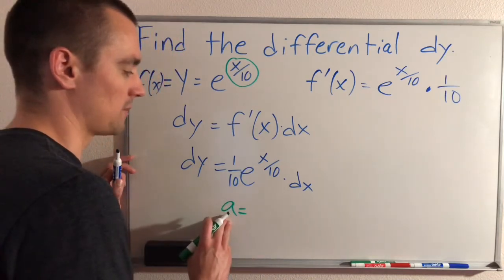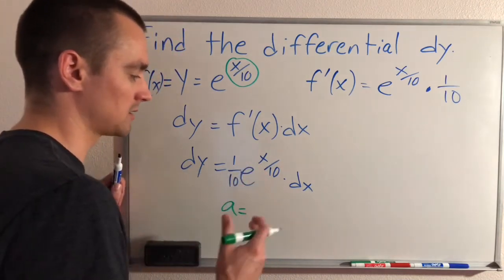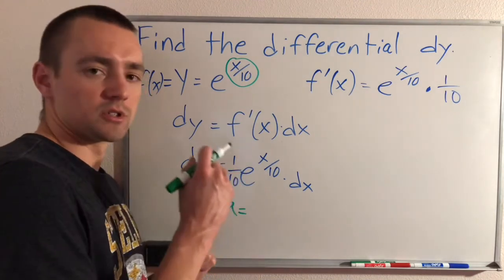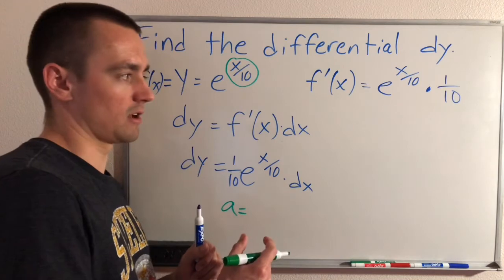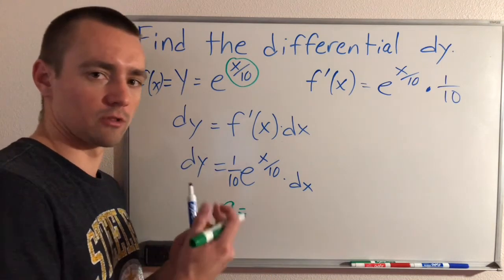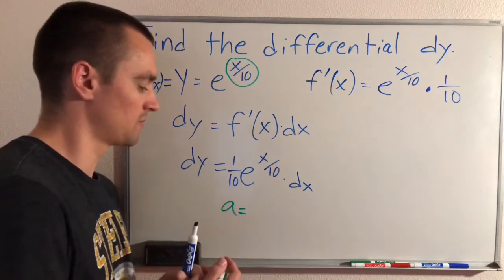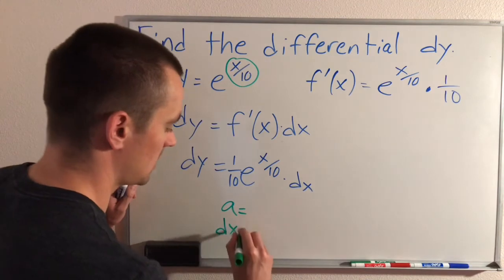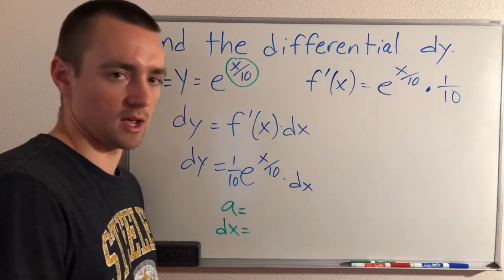which is basically some a value that we're plugging in for our x. And also we want to consider some small distance away from that a value that we're using our linear approximation to go just a little bit over to the right or to the left of that a value. So that small distance that we're going over is exactly what dx is. dx basically just means the change in x.